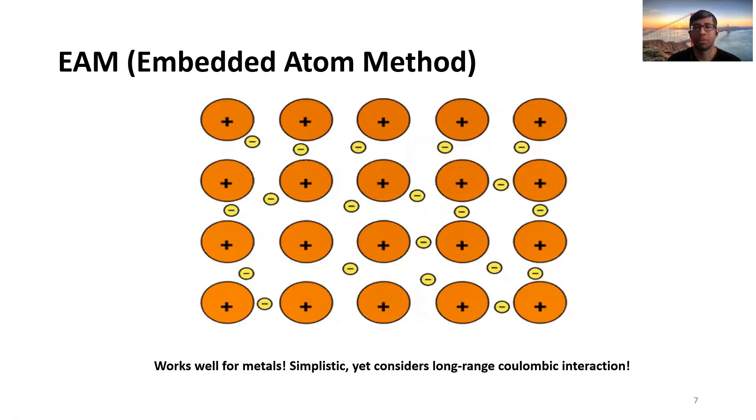This model is particularly well set for metals. You can see that there are several pros and cons in the system. It's yet simplistic, it doesn't consider all the interactions that are present in a system.